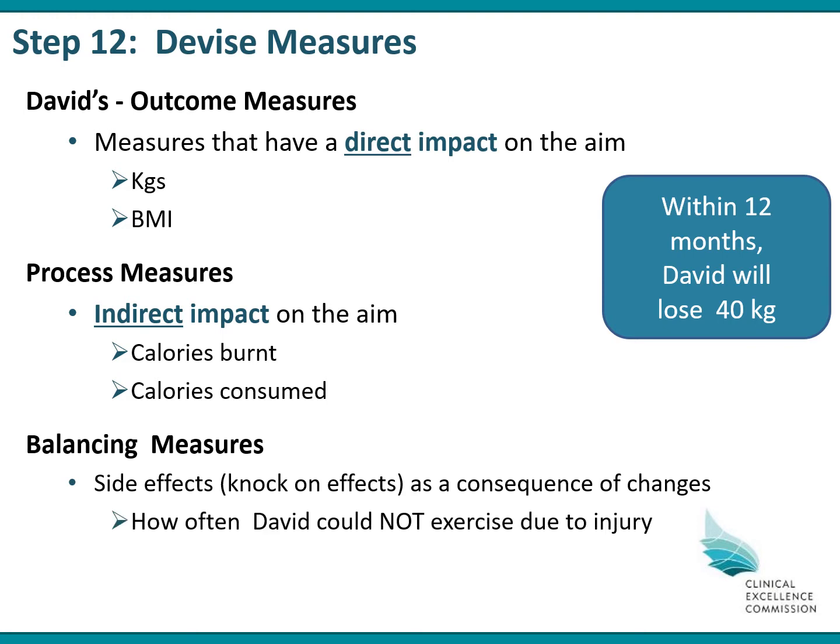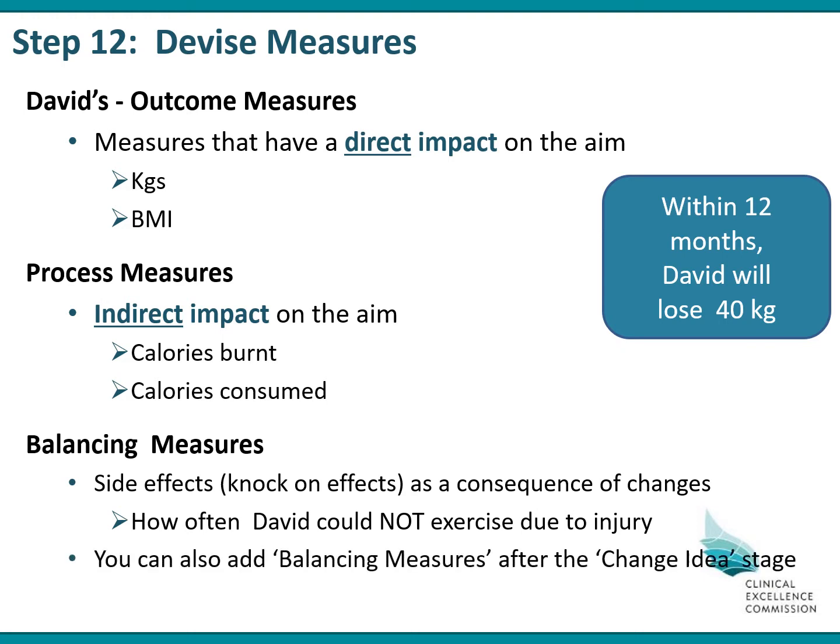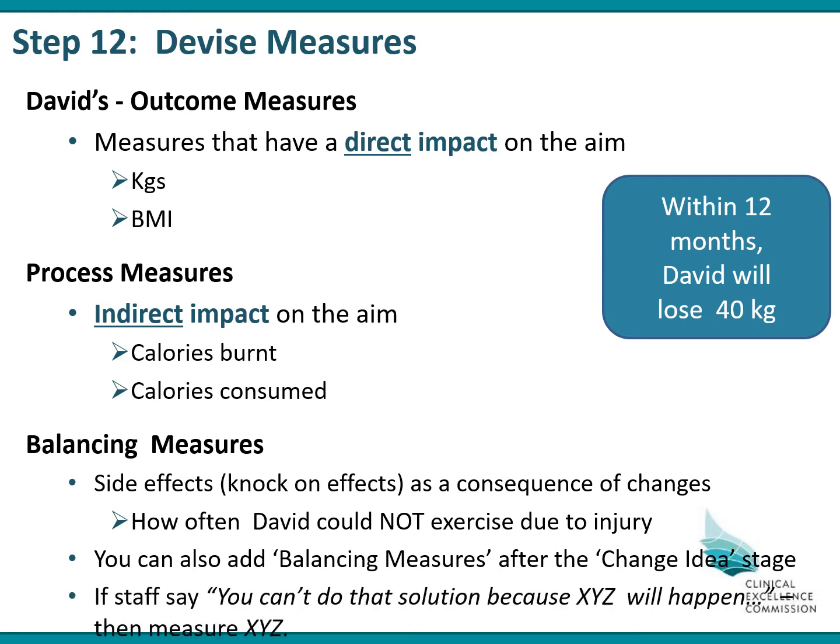For example, David might ramp up his exercise regime, and a balancing measure would be how often he couldn't exercise because he was injured. You could also add balancing measures after you've got to the change concept stage in the driver diagram, because staff might say you can't make a certain change because X, Y, and Z might happen. You could then say, let's measure how often X, Y, and Z actually happens, as long as it's not unethical.